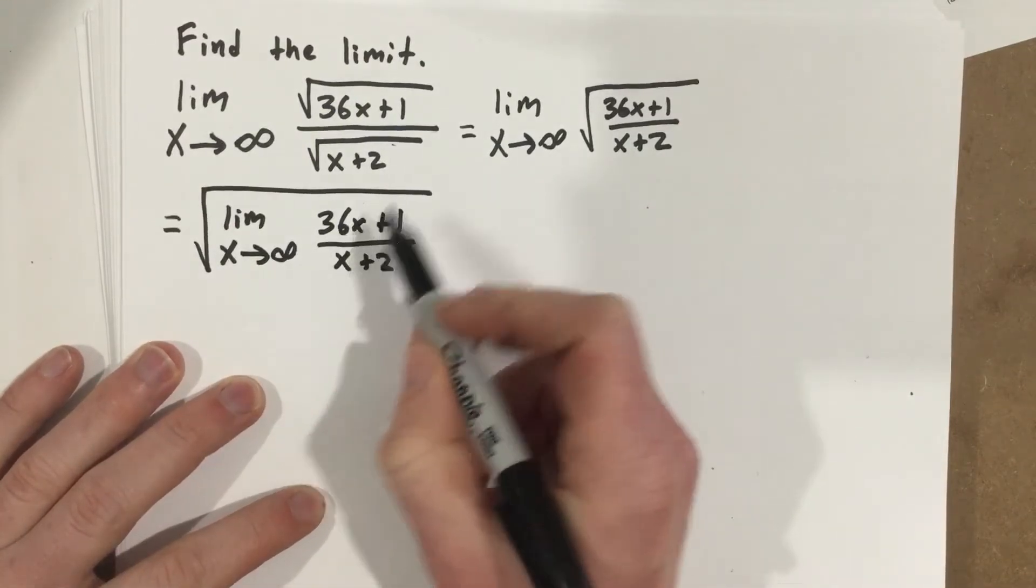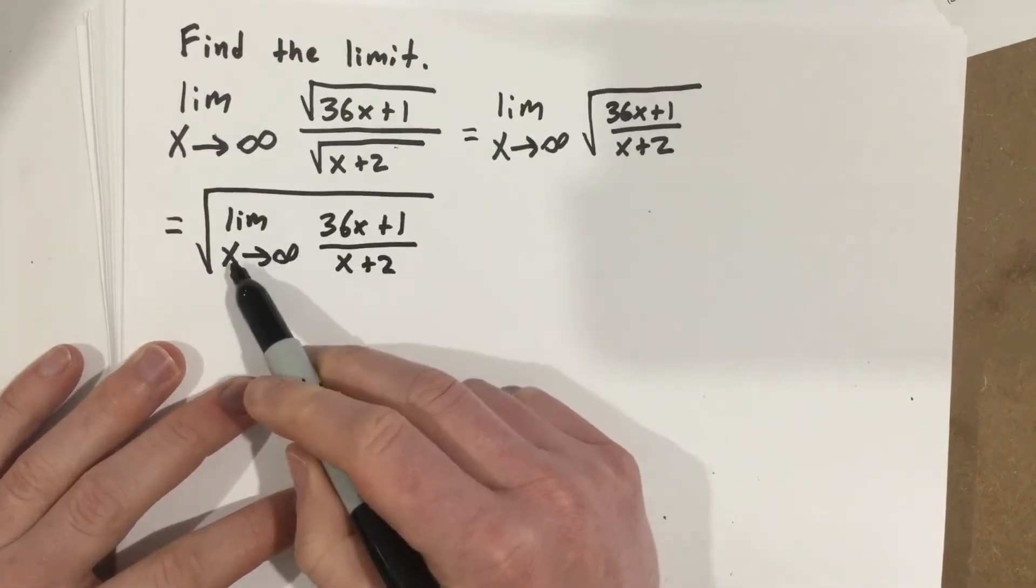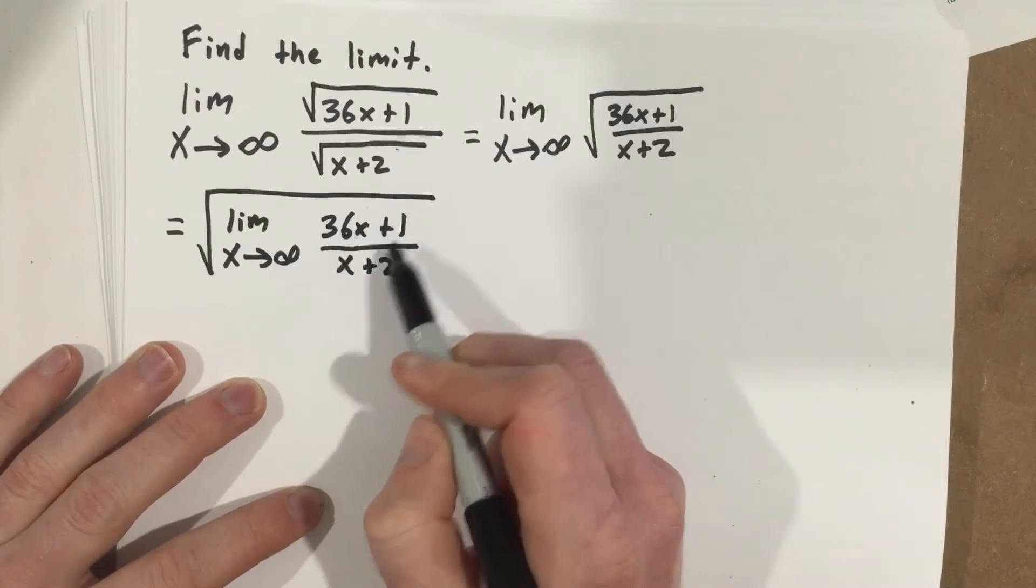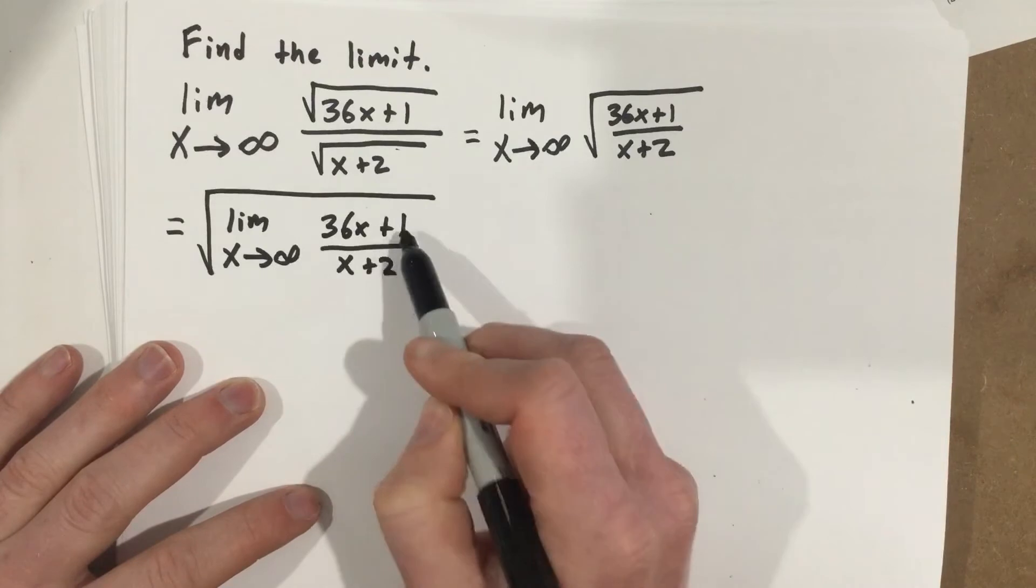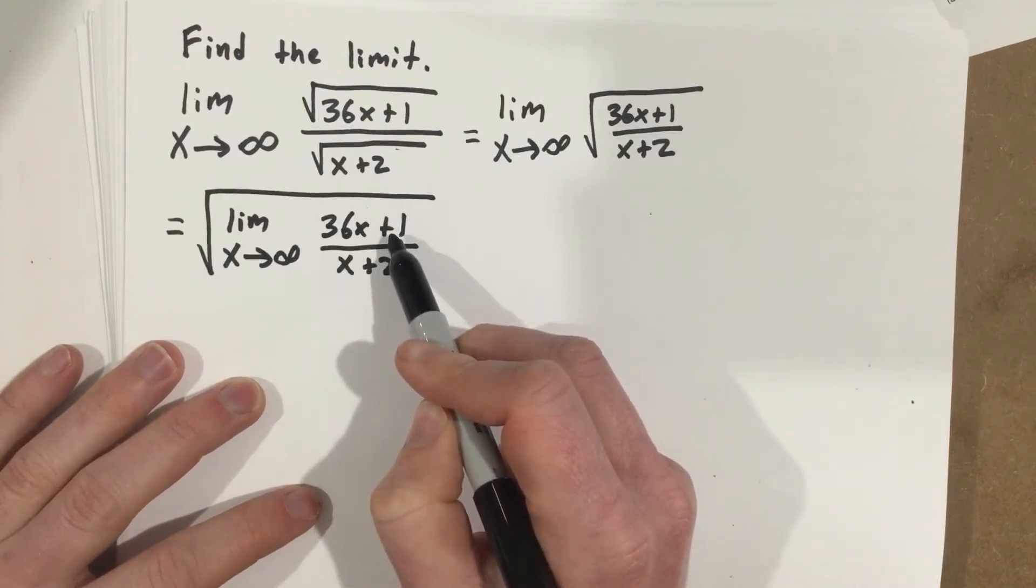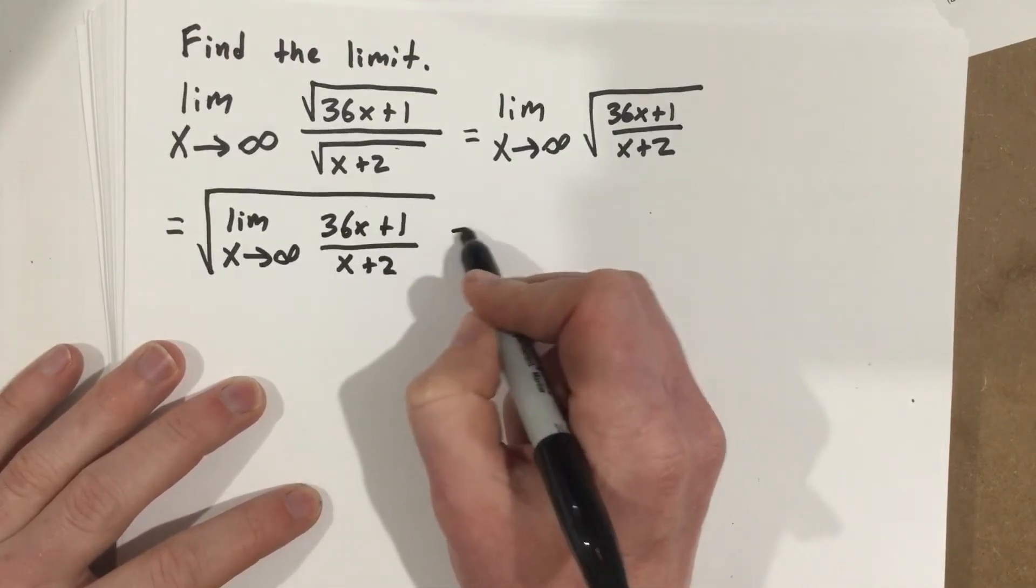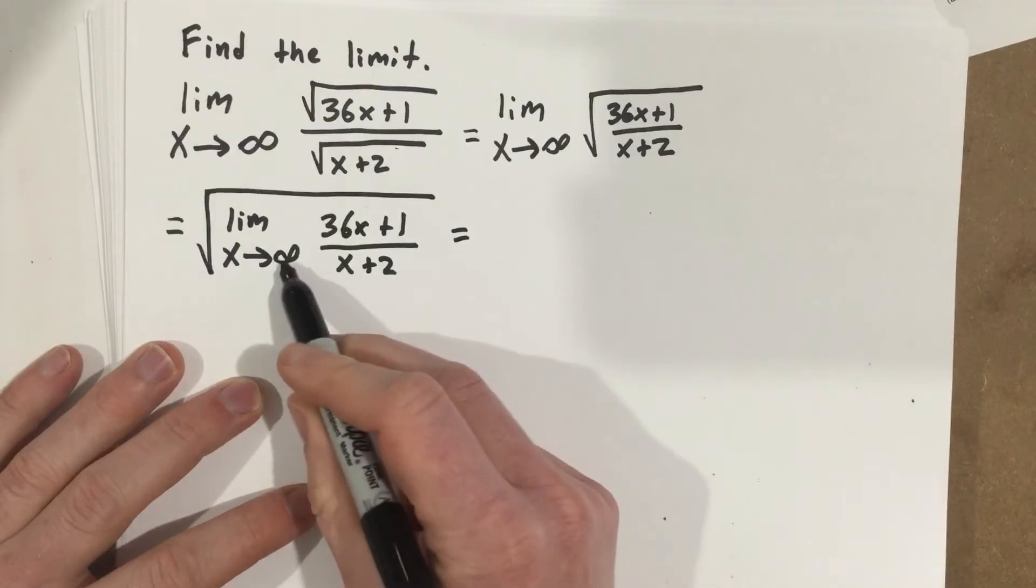Now I can look at the inside and see I'm taking the limit as x approaches infinity of 36x plus 1 over x plus 2. But the plus 1 and the plus 2 when x approaches infinity are pretty insignificant. They don't really matter, especially as I'm approaching infinity.